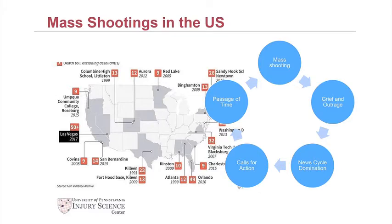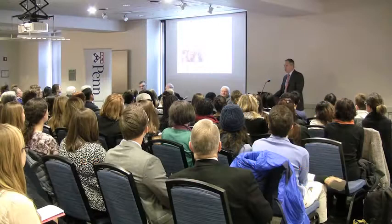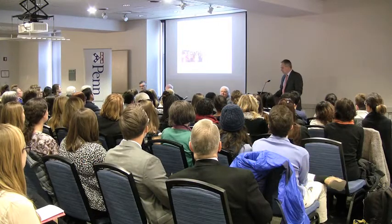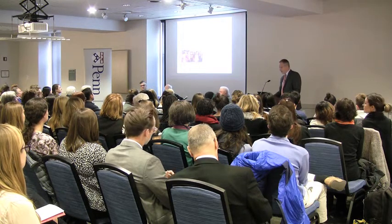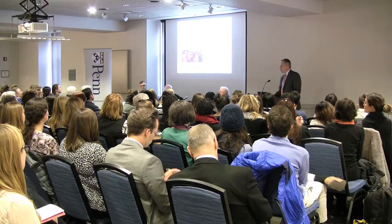This is basically just an infographic of the United States that shows some of the more recent mass shootings. The little red box shows the number of people killed in those incidents. This goes up until 2017, but doesn't include the most recent mass shooting in Florida, where 17 high school students were killed. And this creates a little cycle: there's a mass shooting, an outpouring of grief and outrage, domination of the news cycle and calls for action, and then not much happens — and then there's another mass shooting.